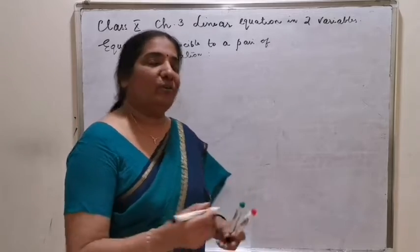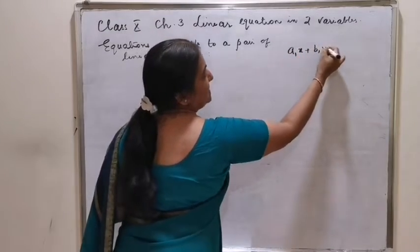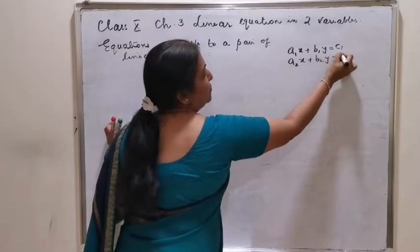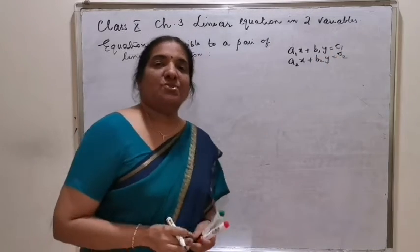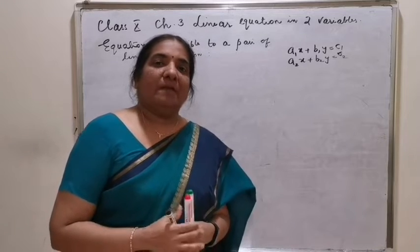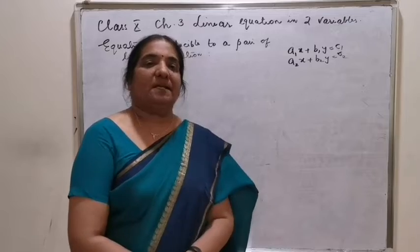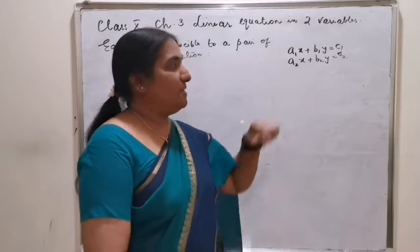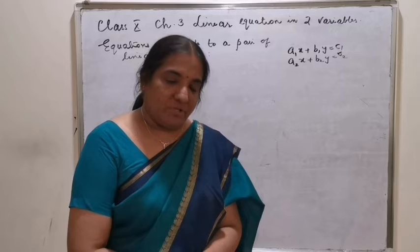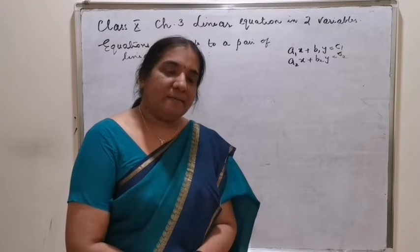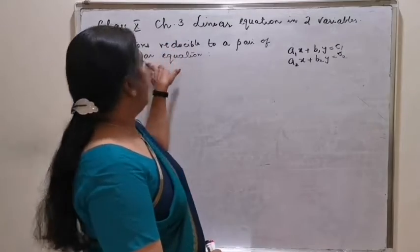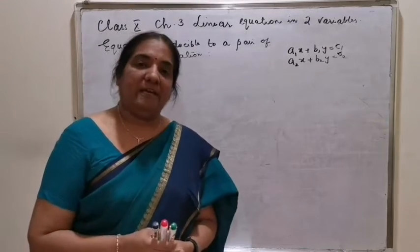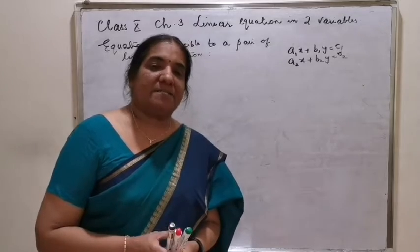The general form of a pair of linear equations was a1x plus b1y is equal to c1, and a2x plus b2y is equal to c2. This topic deals with equations which are not directly in that form. We may have to give another substitution to make the equations familiar as linear equations. That is why the heading is 'equations reducible to a pair of linear equations.' Let's take the textbook exercise question.